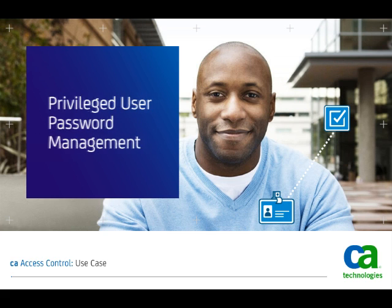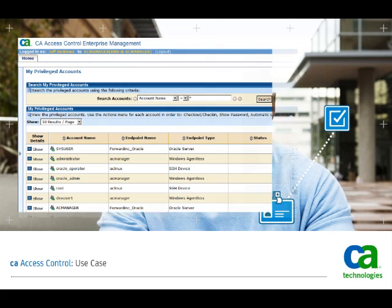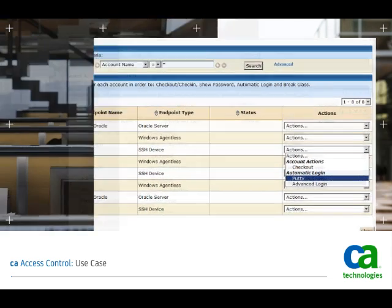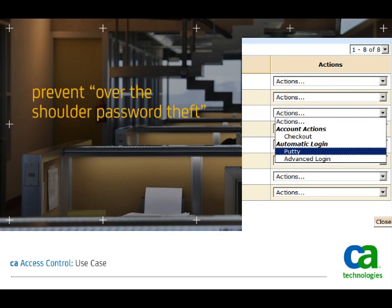He uses the Privileged User Password Management, or PUPM, automatic login feature to access the server. Jeff never actually sees his password, helping to prevent any over-the-shoulder password theft while speeding up the entire process.